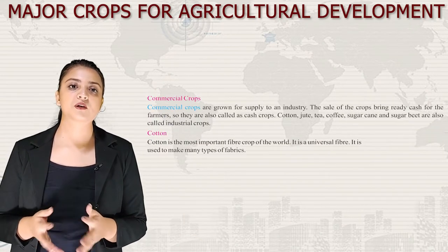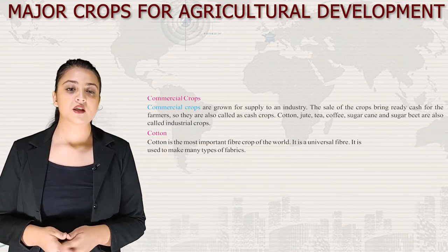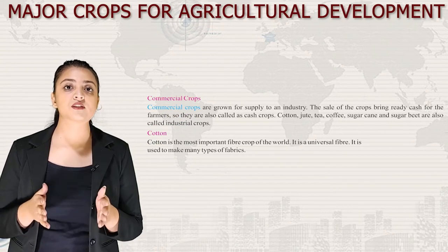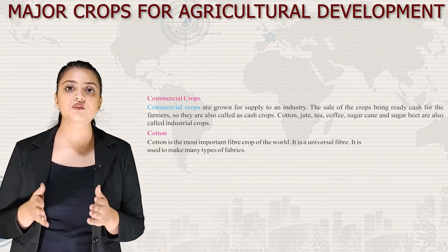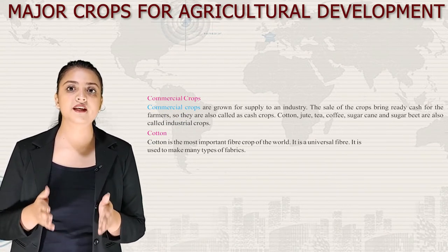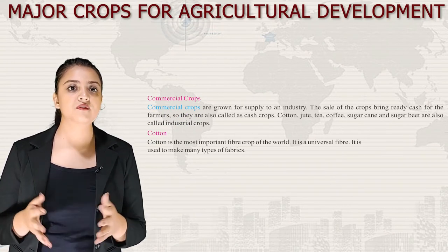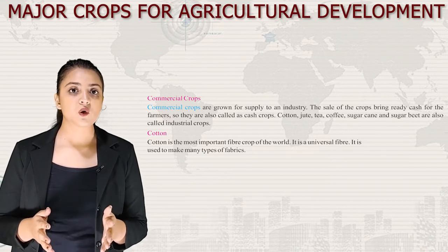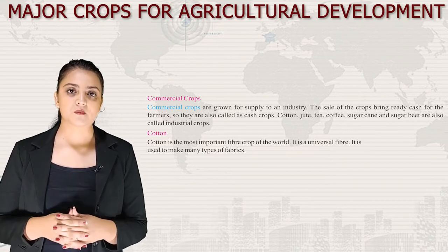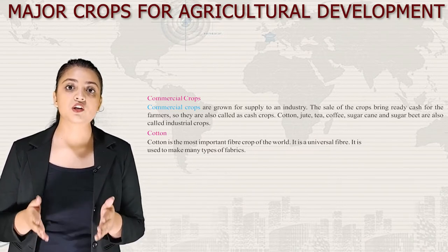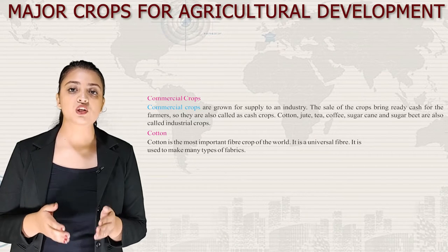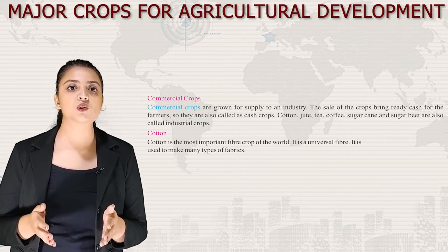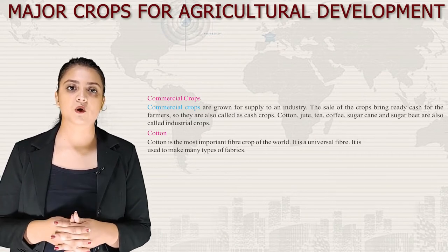Now let's talk about commercial crops. Commercial crops are grown for supply to industries, and their sale brings ready cash for farmers, so they are also called cash crops. Cotton, jute, tea, coffee, sugarcane and sugar beet are also called industrial crops.